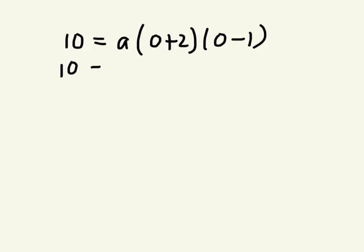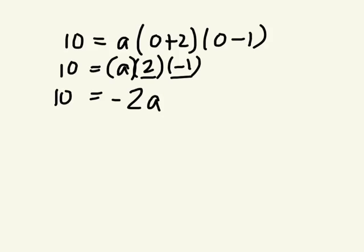So simplify. 0 plus 2. 0 take away 1. This is multiplication. I can switch the order. It doesn't matter. 2 times negative 1. So negative 2 times a.